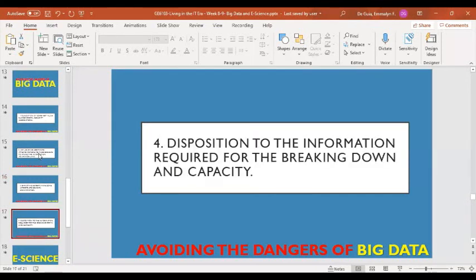Number four is the disposition of the information required for the breaking down and capacity. Here, before the company will dispose some of the information, of course they need backup in order not to lose all of the data. They should also consult professional about the regulatory standards of disposing information.